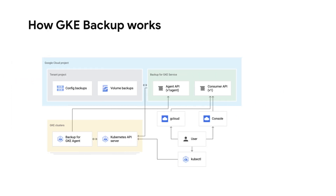This diagram shows the relationship between the different components for backup in GKE. The resource-based REST API service serves as the control plane for Backup for GKE and includes Google Cloud Console UI elements that interact with the API. The agent runs in every cluster where backups or restores are performed, carrying out backup and restore operations by interacting with the Backup for GKE API.